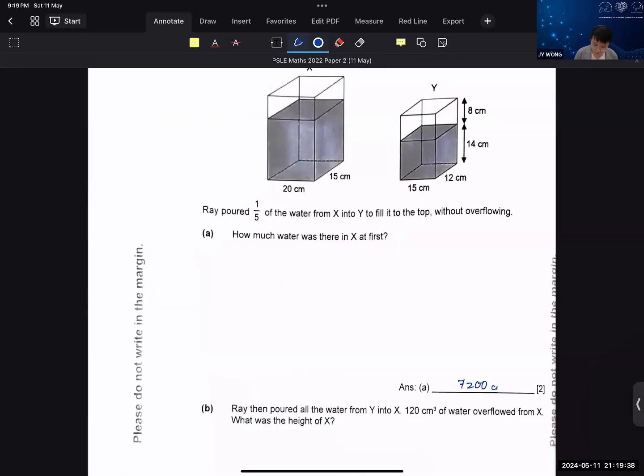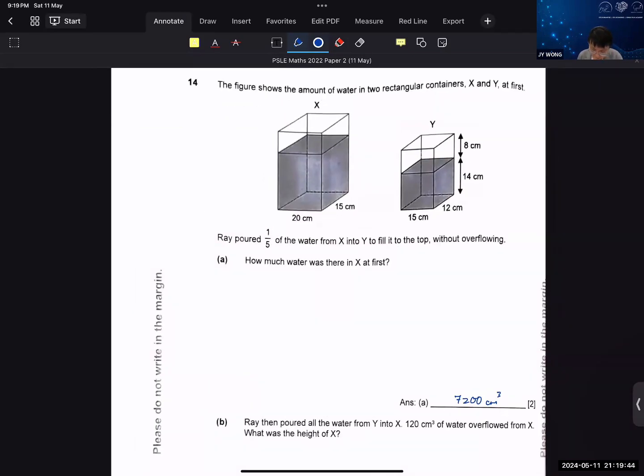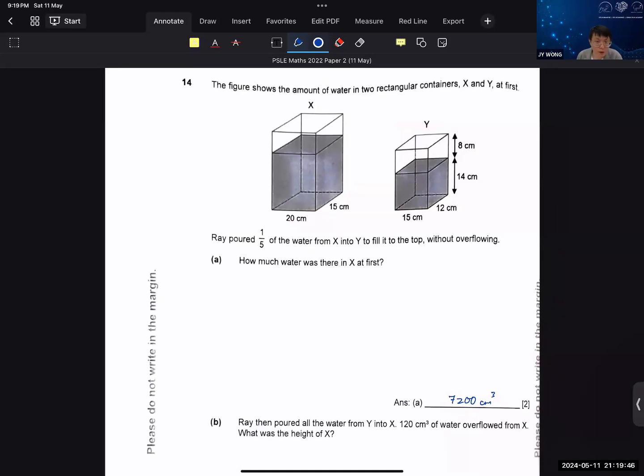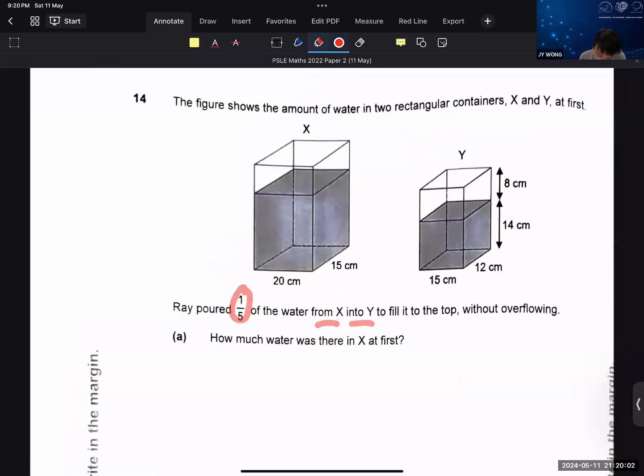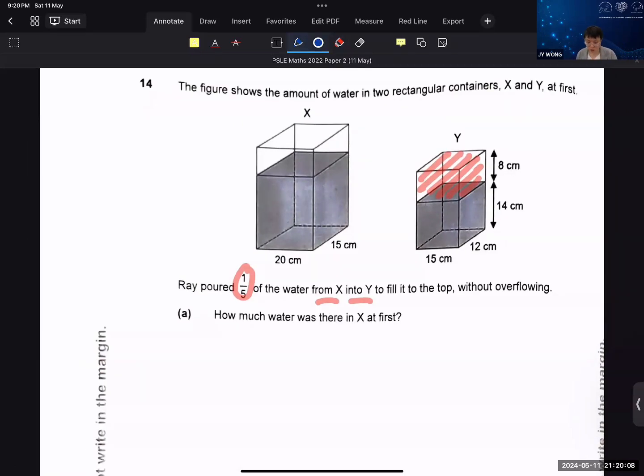This one, you should not make any mistake with. They tell you that he poured one-fifth of the water from X into Y, and then you fill it to the top, which means that one-fifth of X is equal to that amount of volume in Y.